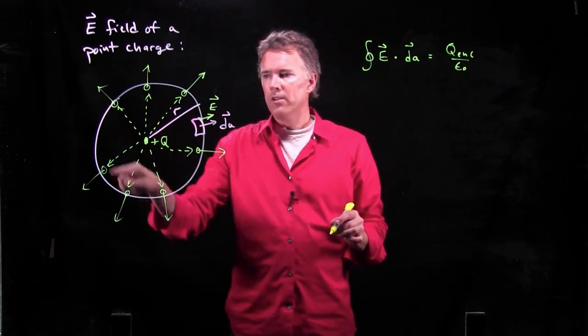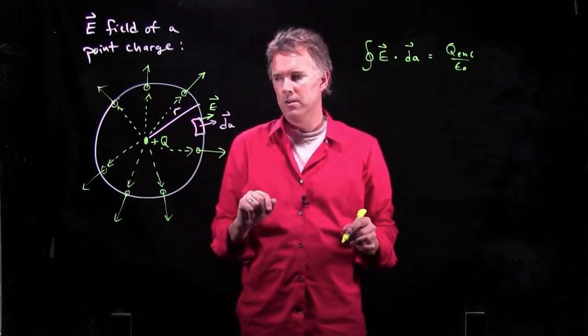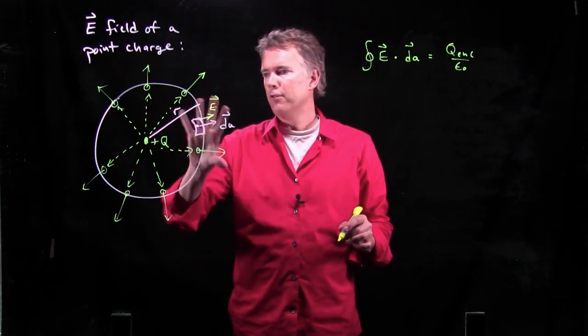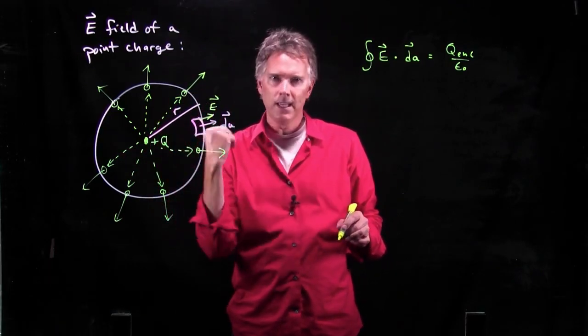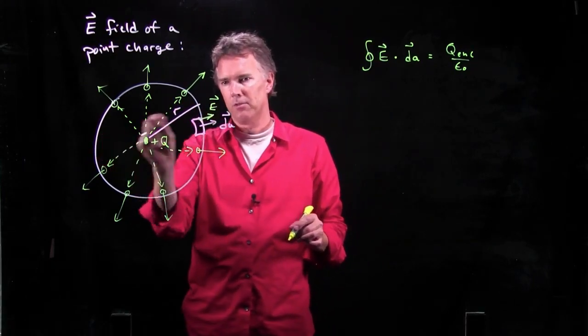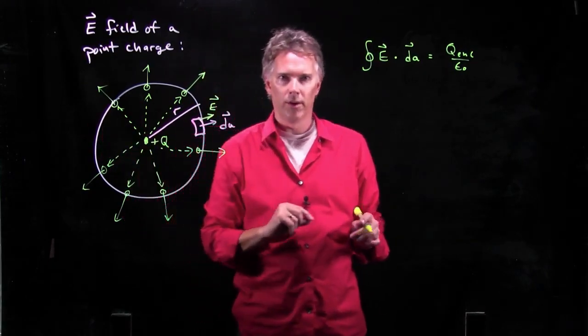The other thing that we can say is E anywhere around on this sphere has to have the exact same magnitude. Why? Because it's always R away from the point charge. And by symmetry, if you flip the whole problem over, you have to get the same result, right? You have to get an E field that has the exact same strength over here as it would over on the other side.